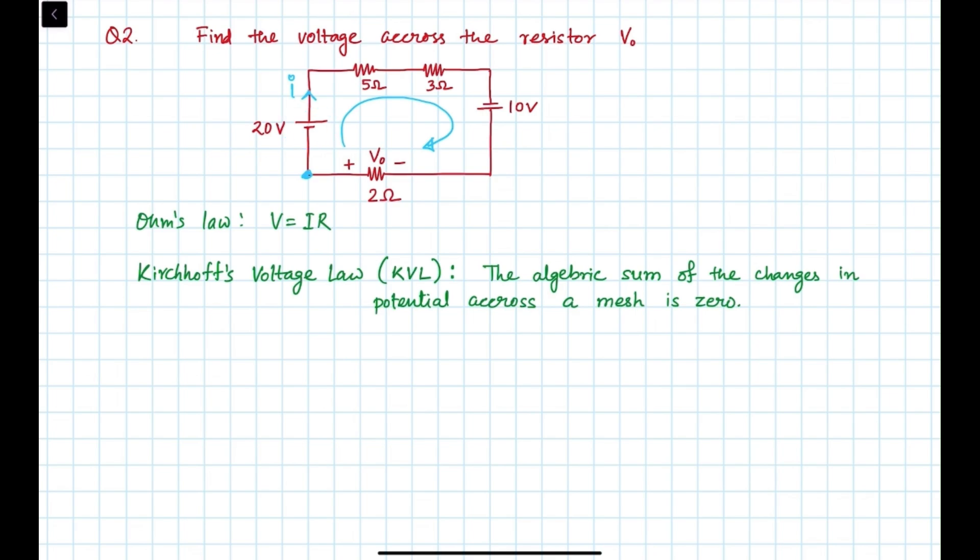Now you see, if the current is flowing through this 5 ohm and 3 ohm resistor from the left side, this will be plus, this will be minus. Whatever the voltage drop there will be, the left hand side will be positive. That will be 5I and 3I. And here we will be getting this side is plus, this is minus, that will be 2I.